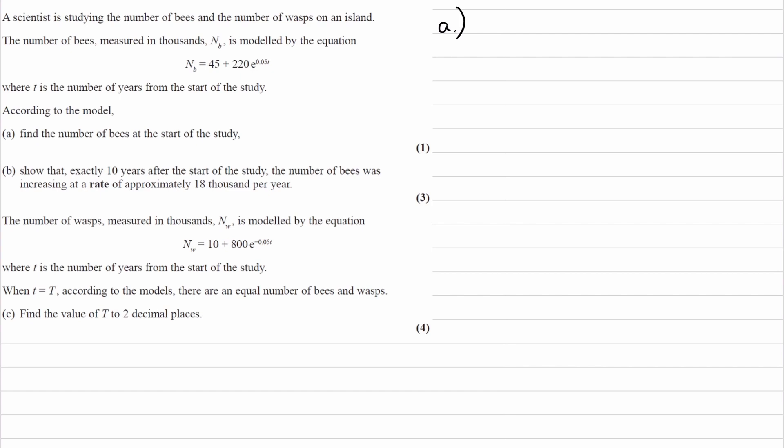Part A. A scientist is studying the number of bees and the number of wasps on an island. The number of bees measured in thousands is nb, and we're given the equation nb equals 45 plus 220 e to the power of 0.05t. t is the number of years from the start of the study. According to the model, find the number of bees at the start.